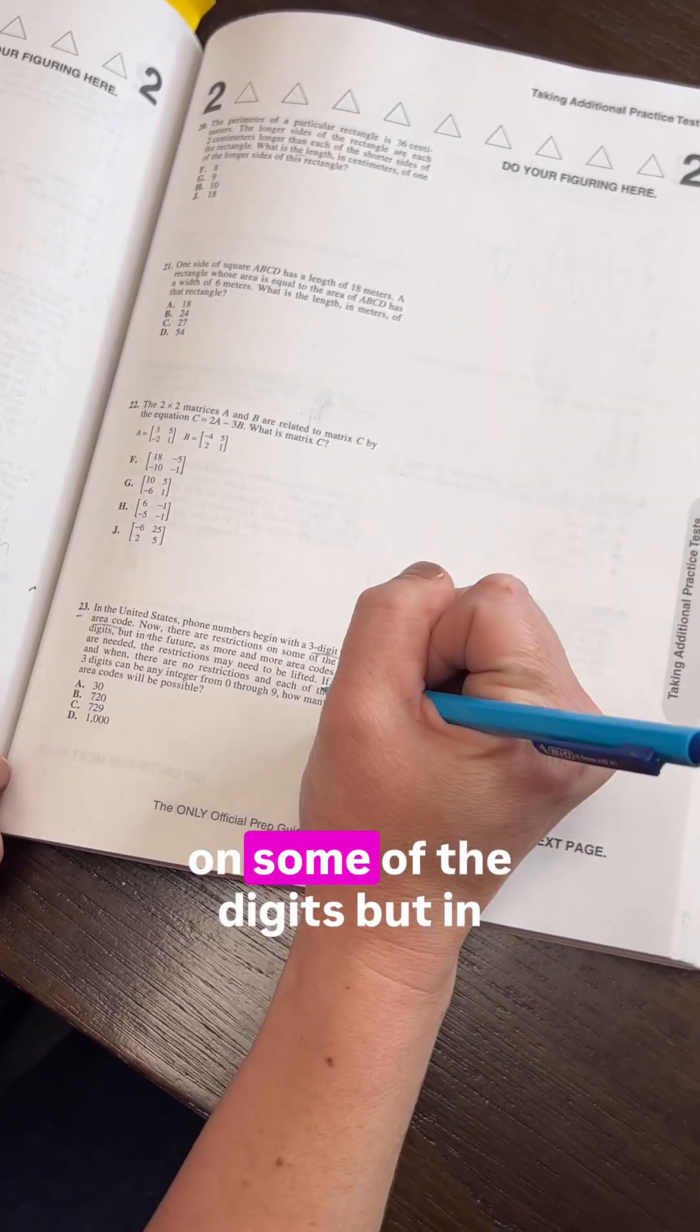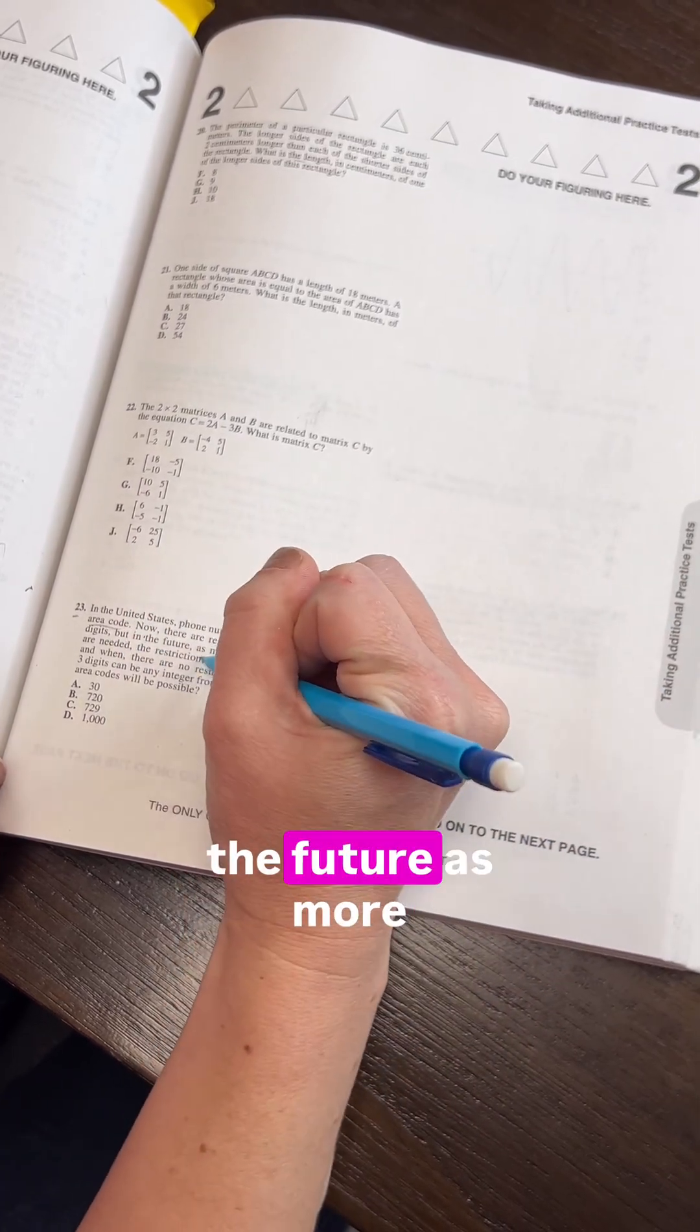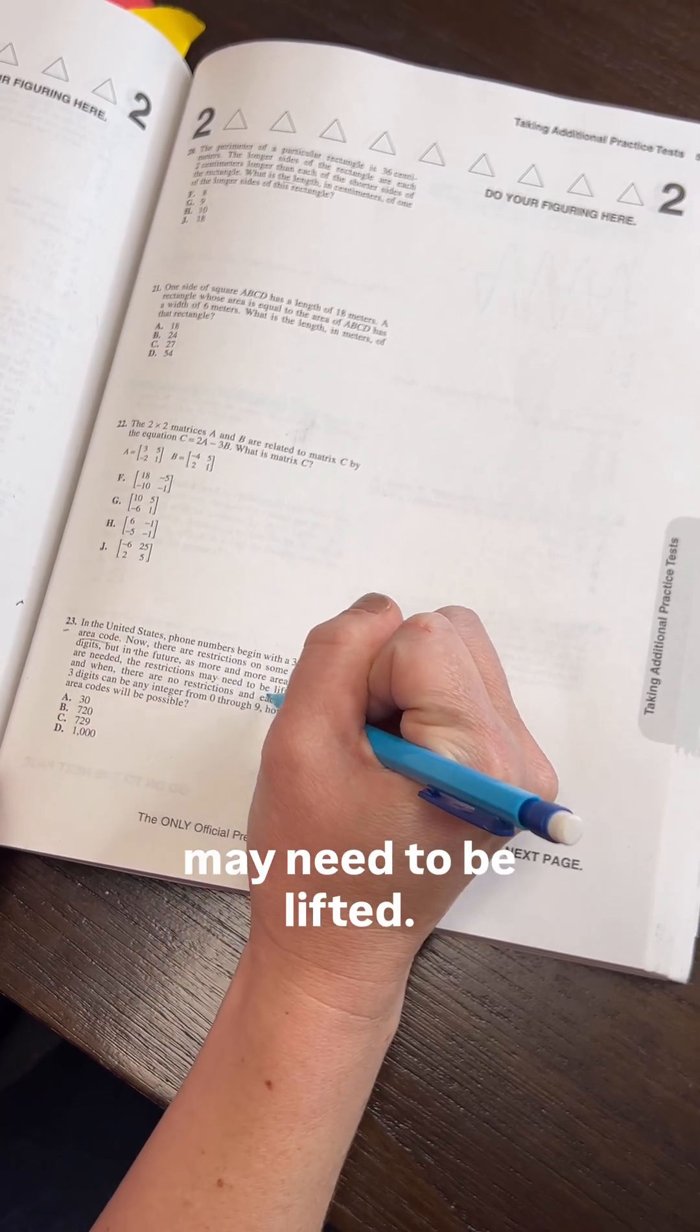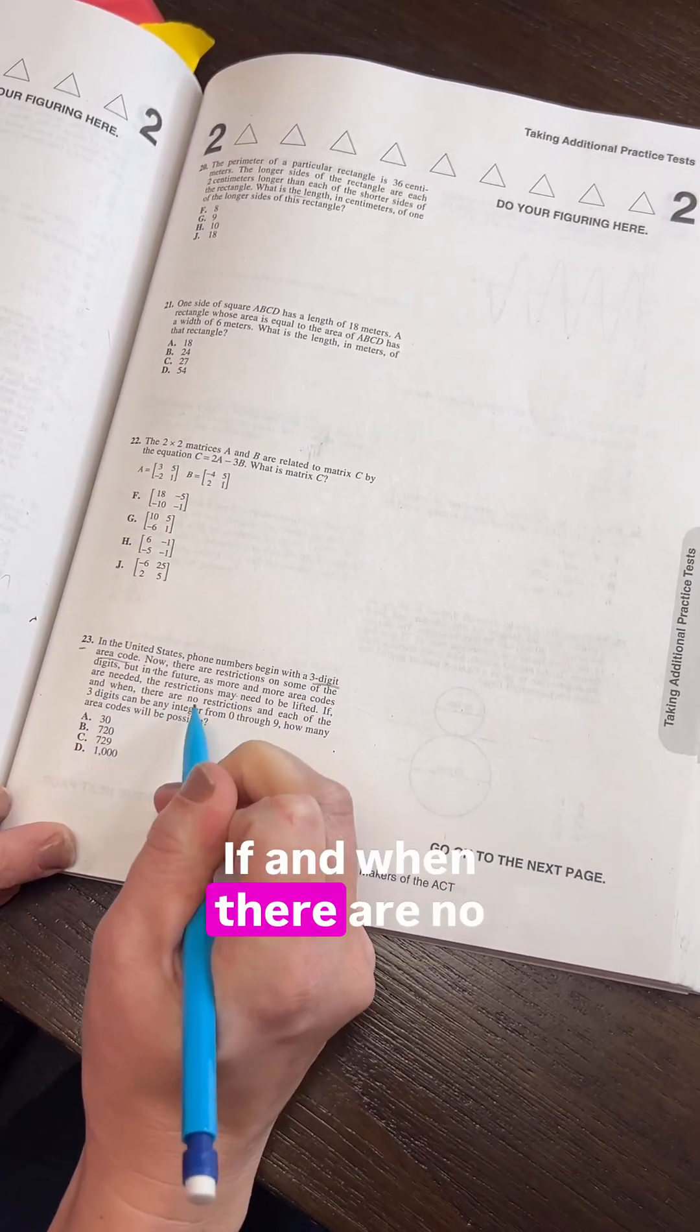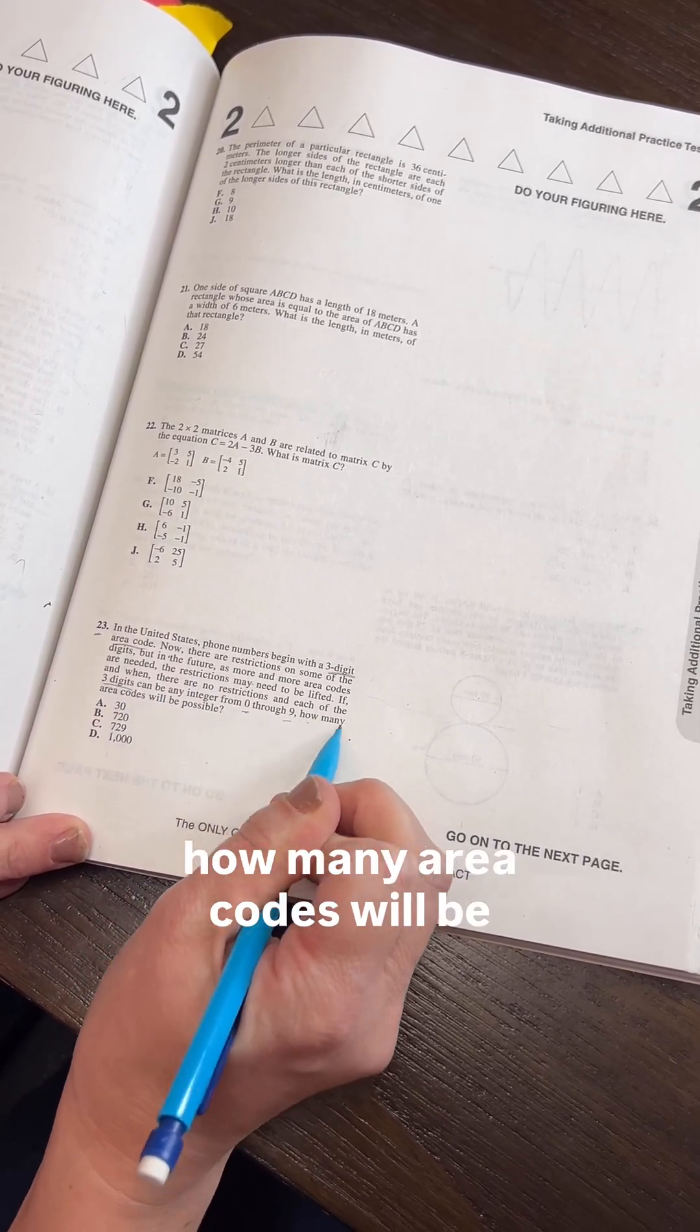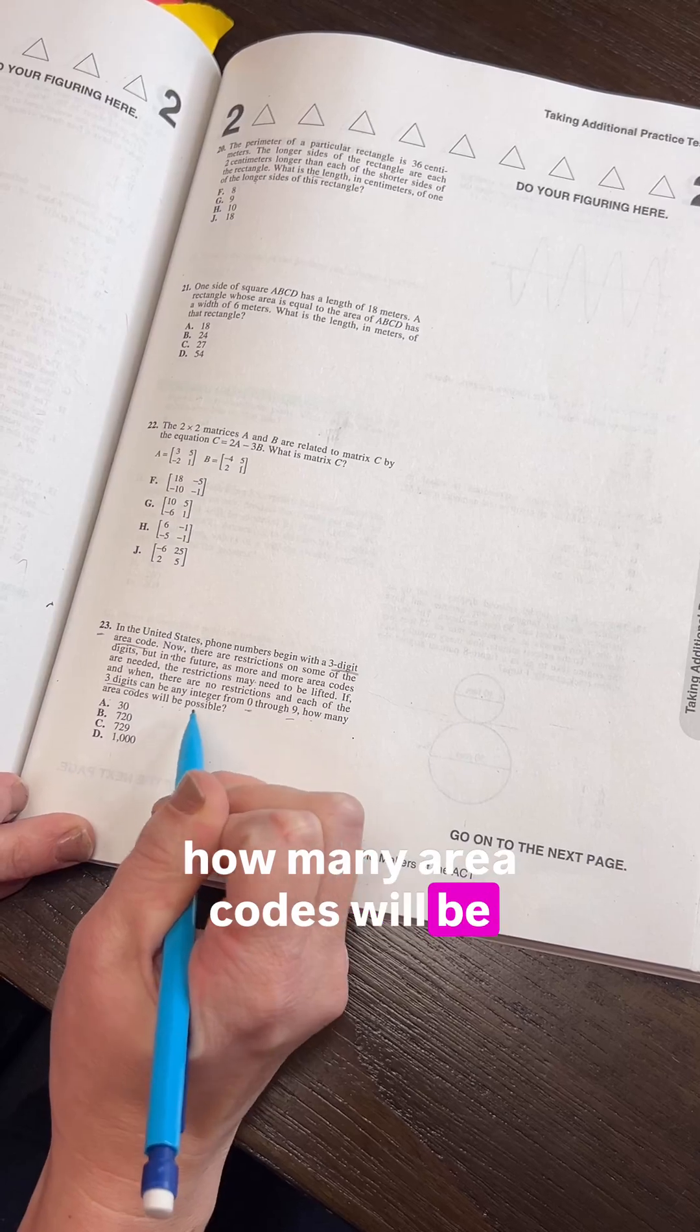Now there are restrictions on some of the digits, but in the future, as more area codes are needed, the restrictions may need to be lifted. If there are no restrictions and each of the three digits can be any integer from 0 to 9, how many area codes will be possible?